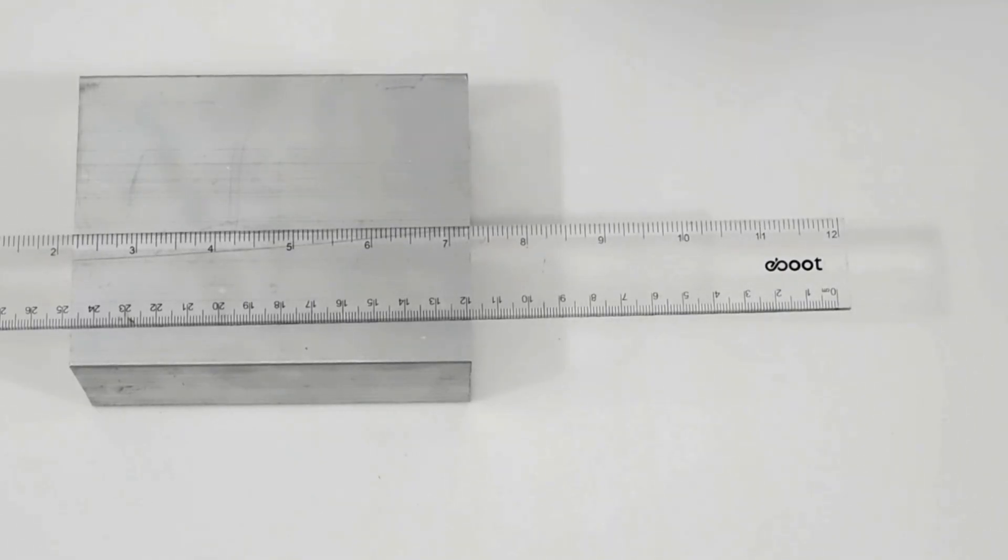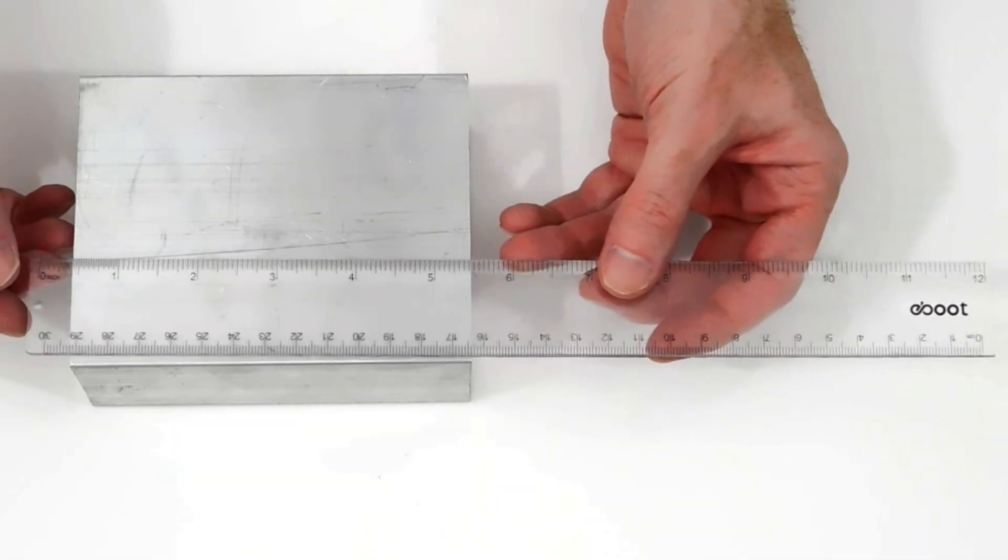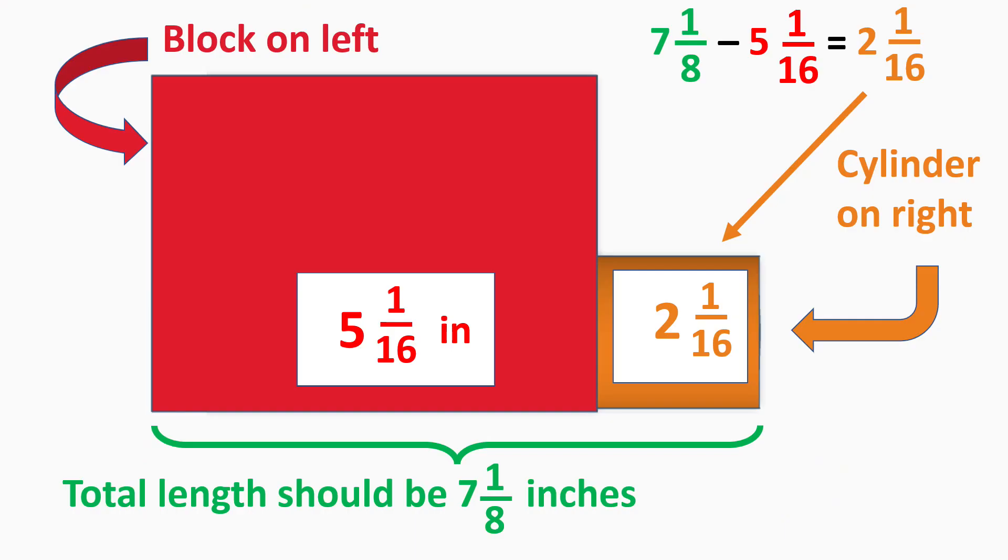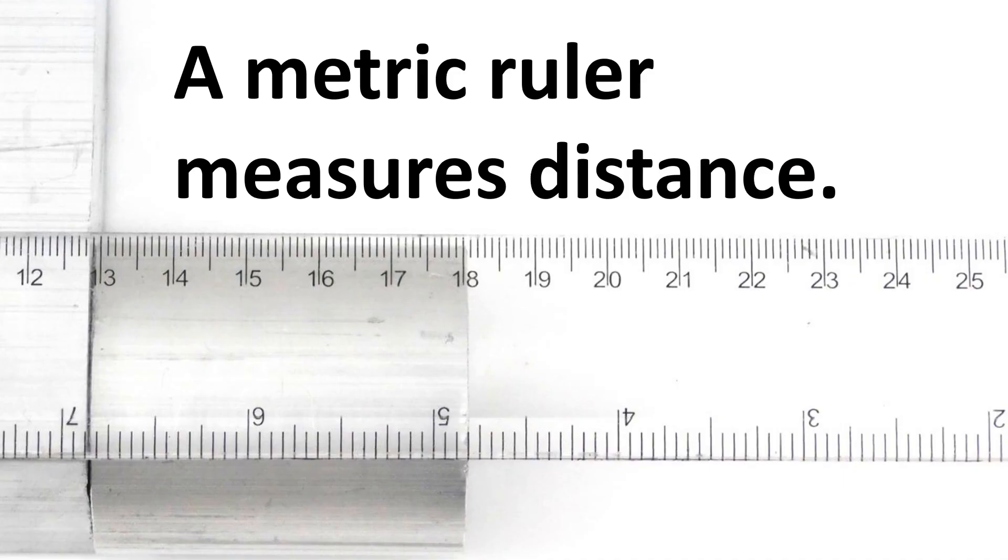We could have calculated the length of the cylinder by measuring it in inches, but that would require mixed fractions and subtracting fractions. To summarize this scientific instrument, a metric ruler measures distance, such as length.